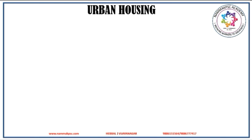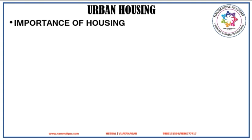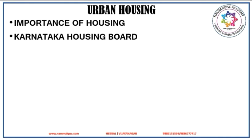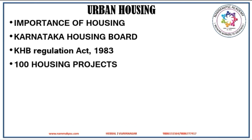Let us discuss about urban housing. Housing of poor and downtrodden assumes greater importance both in rural and urban areas. To meet the endeavors of Karnataka state in promoting urban housing, Karnataka established the Karnataka Housing Board through the Karnataka Housing Board Regulation Act 1983. Under the 100 Housing Projects scheme, 99 schemes are completed by KHB for providing affordable housing, and one scheme is under formulation.